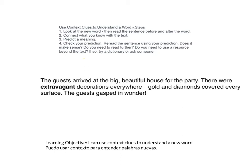So let's read. Our word here is extravagant. I'm going to look at the word, then read the sentence before and after. The guests arrived at the big, beautiful house for the party. There were extravagant decorations everywhere. Gold and diamonds covered every surface. The guests gasped in wonder.